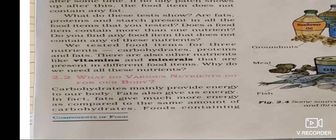Now you know the different components present in our food: carbohydrates, proteins, fats, vitamins and minerals, dietary fibers or roughage, and most importantly water, which cannot be ignored. Vitamins and minerals are present mostly in all vegetables and fruits.